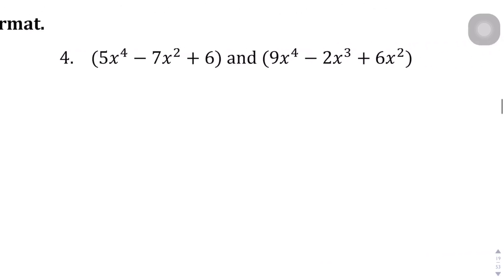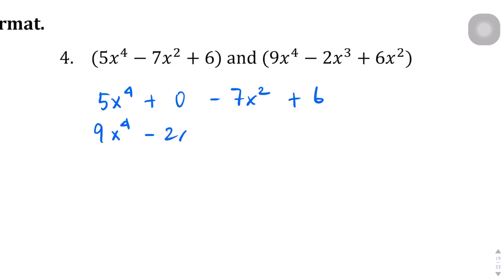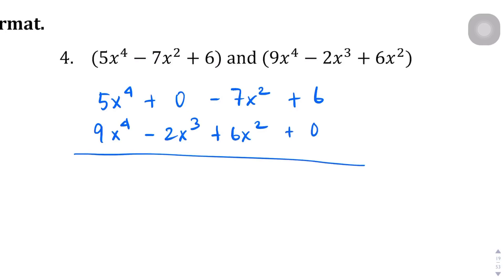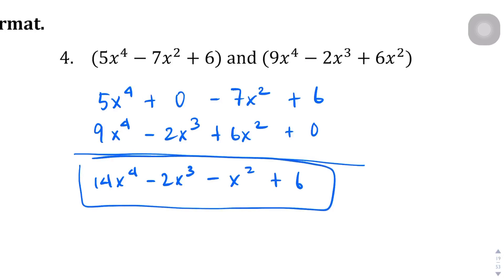Question number 4. First term: 5x to the power of 4, then no x cubed term so put 0, then minus 7x squared plus 6. The second expression is 9x to the power of 4 minus 2x cubed plus 6x squared, and no constant so we add 0. Adding straight down: 5 plus 9 is 14x to the power of 4; 0 minus 2x cubed is negative 2x cubed; negative 7x squared plus 6x squared is negative x squared; and 6 plus 0 is 6. So there's the simplified expression.